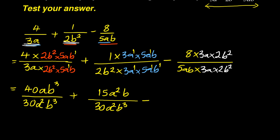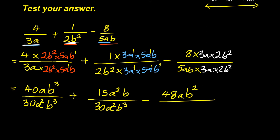The last one: 8 times 3 is 24. Now 24 times 2 is 48 — you can test that with your calculator. And then I've got only one a there, and b squared, all over. Now 5 times 3 is 15, 15 times 2 is 30. And then a times a is a squared, and b to the power of 1 times b squared is b to the power of 3. You can see that we have the same denominators, same denominators, same denominators.